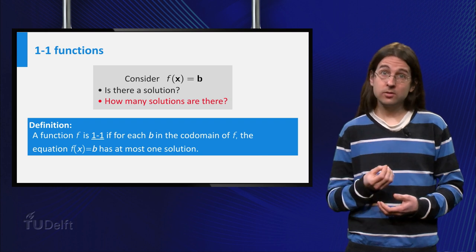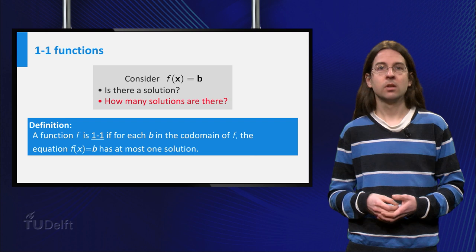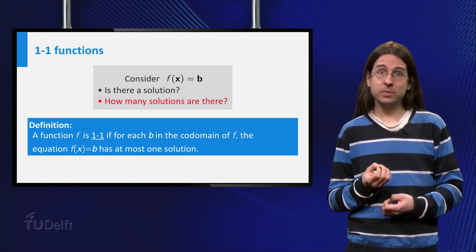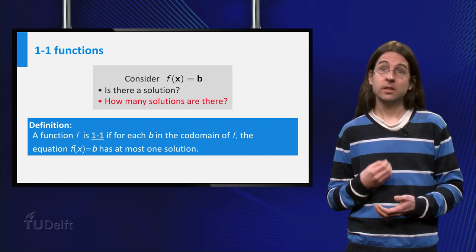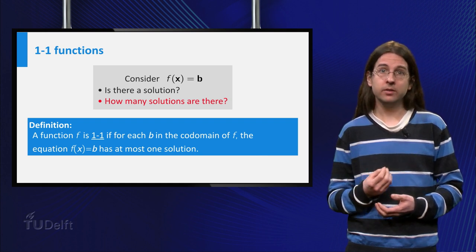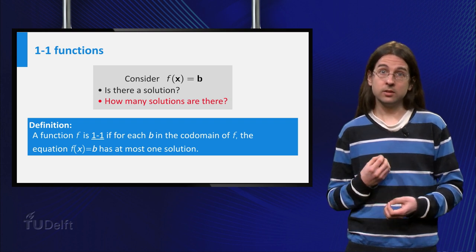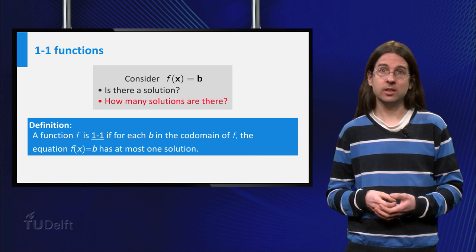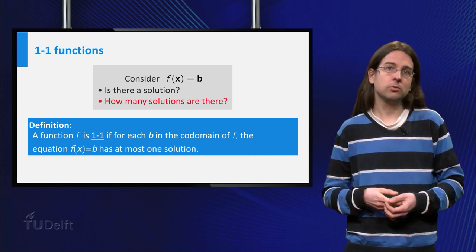If there is a solution, the next question is if it is unique. If the solution to f(x) = b is unique for all vectors b in the range, then we say f is 1-to-1 or injective. Notice that our example is also not injective, because there were two solutions to f(x) = (2, 0, 1).